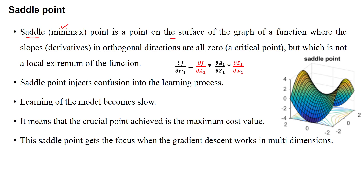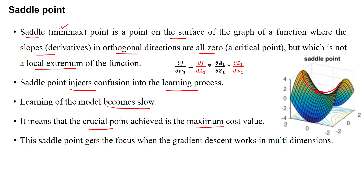The saddle point is called a minimax point, which is the point on the surface of the graph of a function where the slopes in orthogonal directions are all zero. Whatever gradient you calculate for any parameter, the slope will be zero. If the slope becomes zero, it assumes it is an extremum but it is not a local extremum. Due to that, the saddle point injects confusion into the learning process, causing the model to learn very slowly.